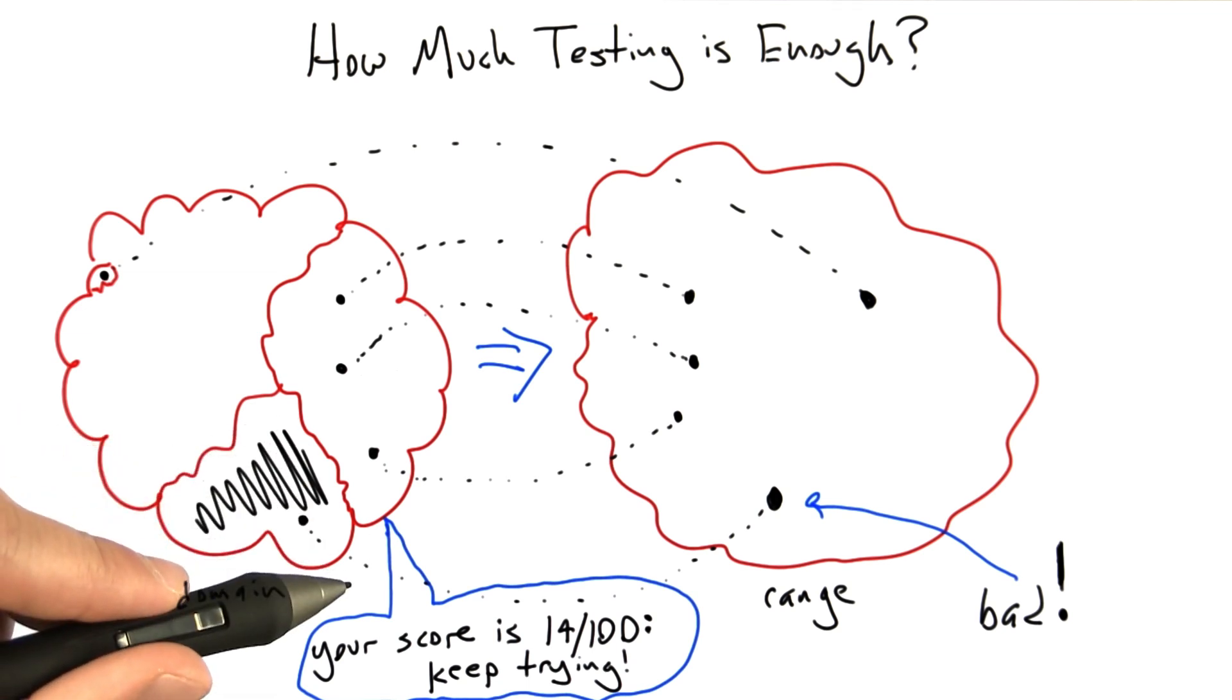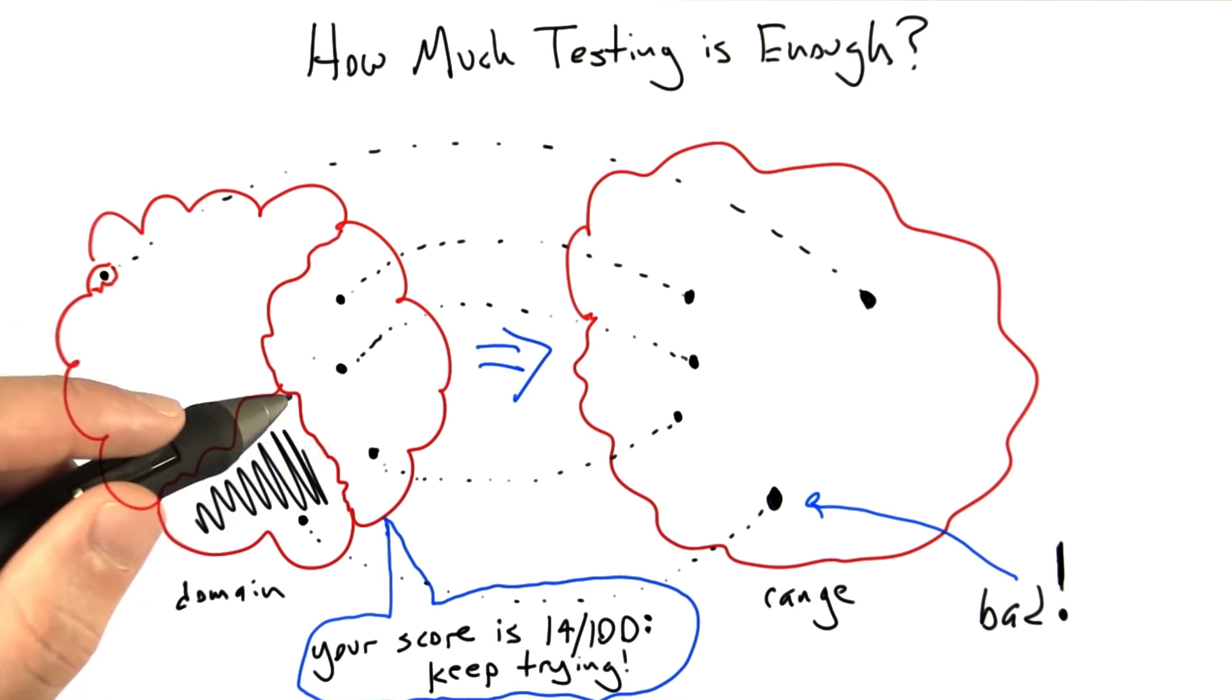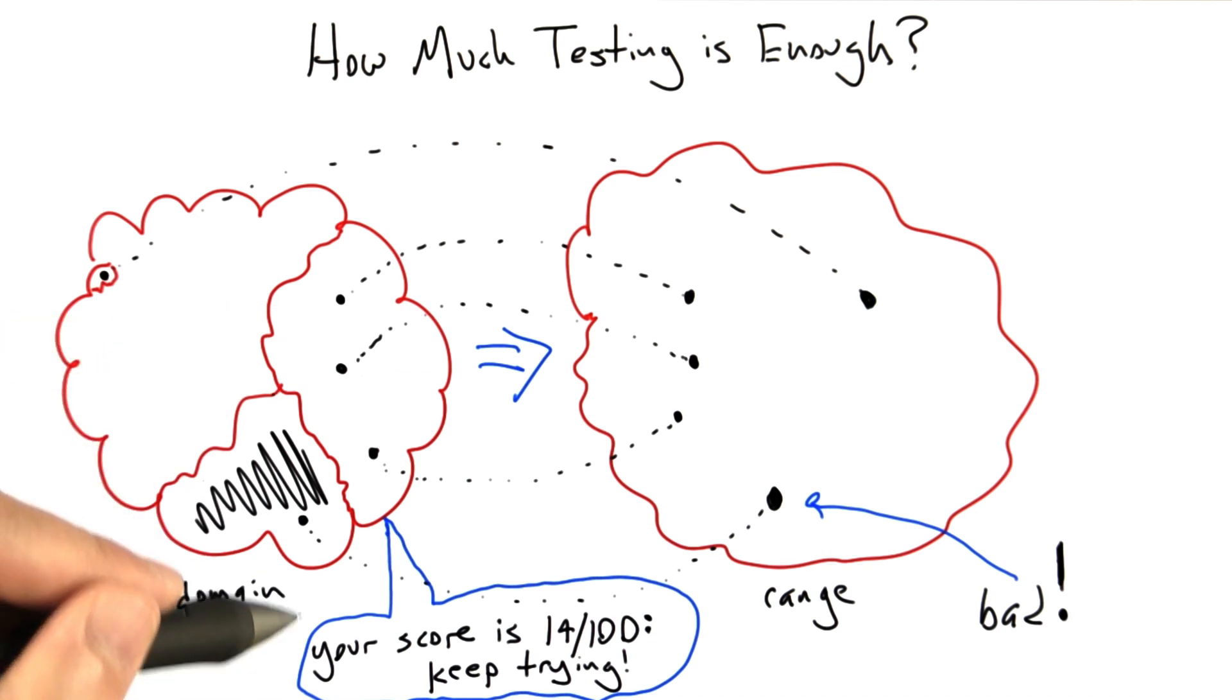Other reasons to assign a score to a testing effort are that we might want to be able to argue to our boss or to some sort of a certifying authority that we've done enough testing. Similarly, we might want to argue that a system we're developing hasn't been tested well enough, that it's not yet safe to deploy, and that it needs more testing, and a testing score can provide a numerical justification for that sort of argument.